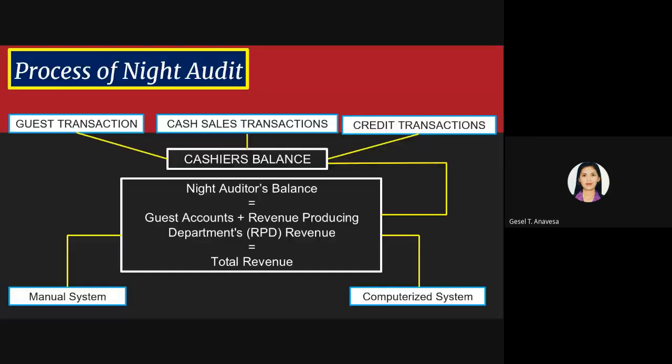Now let us proceed to the process of night audit. From guest transactions to sales transactions and credit transactions, all information from those transactions will be balanced by the cashier. The formula is: night auditor's balance equals guest account plus revenue-producing department (RPD) equals total revenue. This formula can be computed through manual system or the computerized system. The steps are essentially the same using the manual, semi-automated, or computerized system.